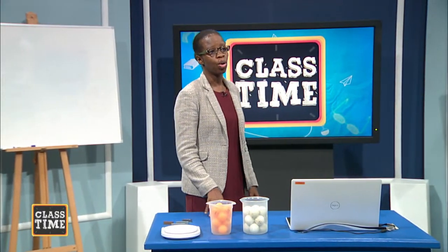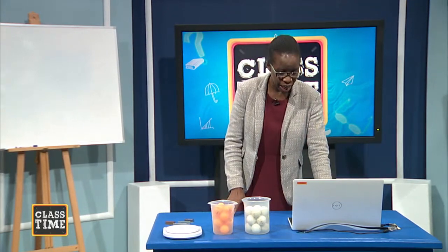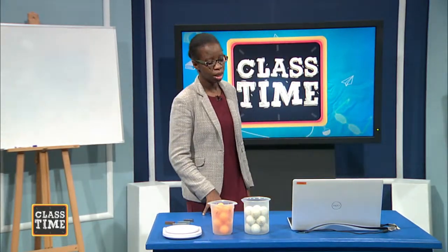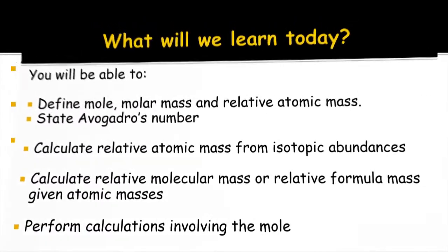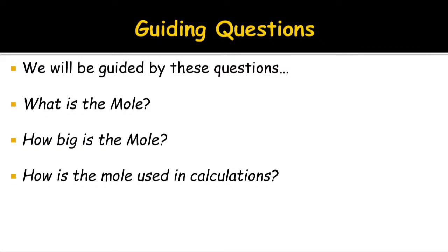Today we hope to learn the following: define the mole, molar mass, and relative atomic mass; state Avogadro's number; and calculate relative atomic mass from isotopic abundances. We'll also calculate relative molecular mass or relative formula mass given atomic masses, and perform calculations involving the mole. We'll be guided by three questions: What is the mole? How big is the mole? And how do we use the mole in calculations?